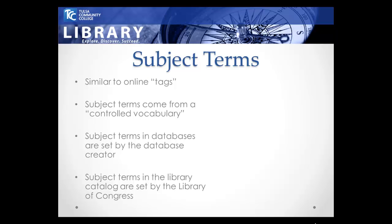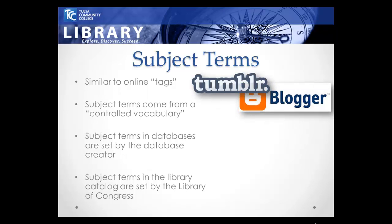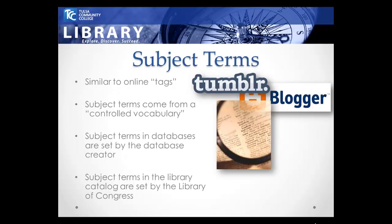Subject searching is a way to retrieve highly relevant results through a narrow search. A subject term is a descriptor that tells you which topics are covered by a book or article. You can think of subject terms as being similar to online tags, like you might see on blogs or on Tumblr. The difference is that subject terms come from what's called a controlled vocabulary.